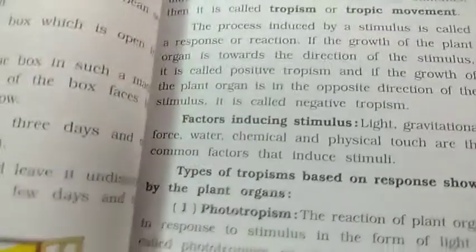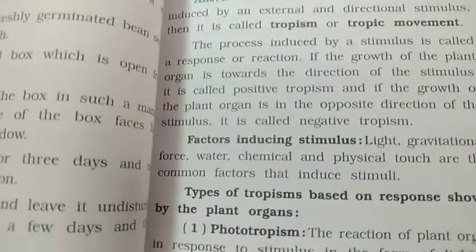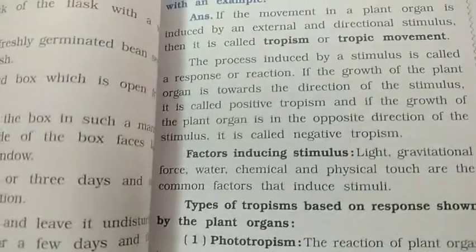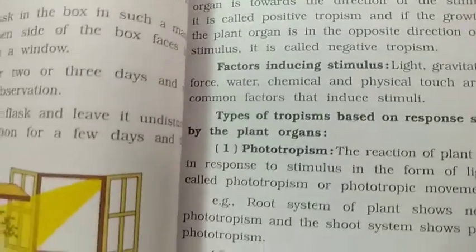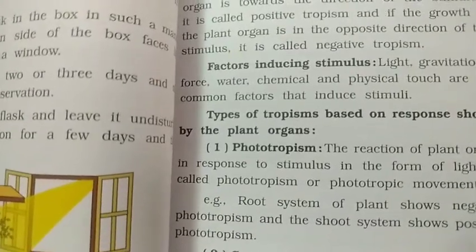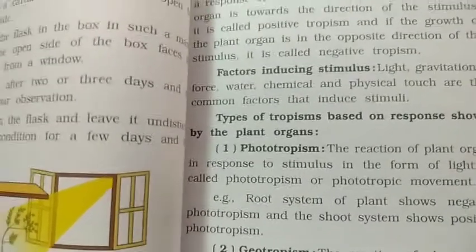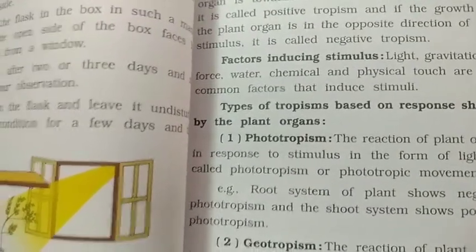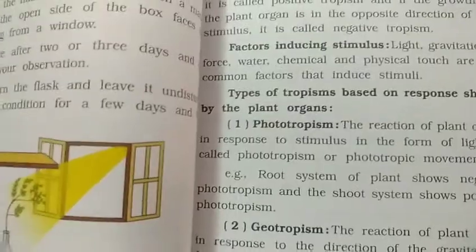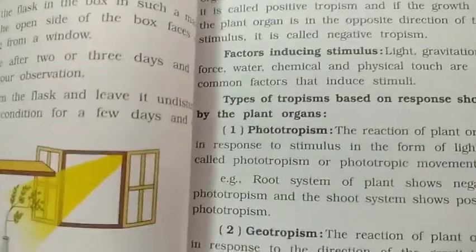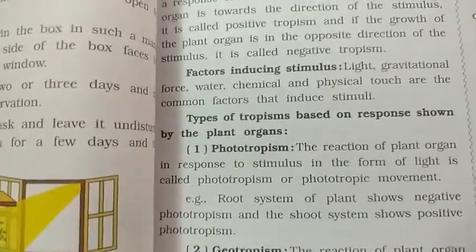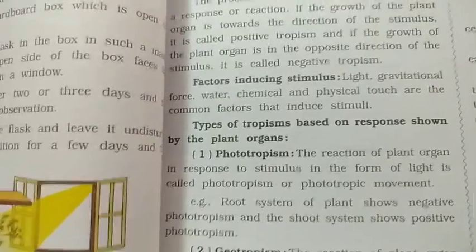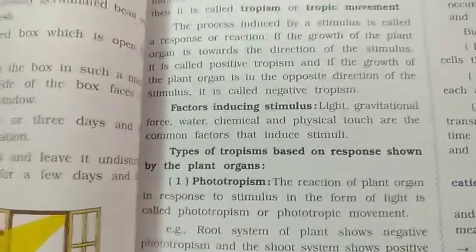So these are the five different types of tropism: phototropism based on light, geotropism based on gravitational force, hydrotropism based on water, chemotropism based on chemical substance, and thigmotropism based on touch. These are the five parts of tropism.